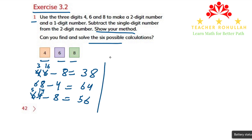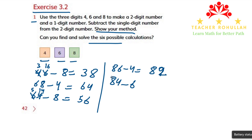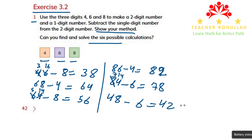These are three possible answers. Let's find the other three. We can make 86 minus 4, which equals 82. The fifth number we can make is 84 minus 6. 6 cannot be subtracted from 4, so we borrow from 8. It becomes 7, and the ones become 14. 14 minus 6 equals 8, and 7 minus nothing is 7, so the answer is 78. The last number is 48 minus 6, which equals 42, because 8 minus 6 is 2 and 4 minus nothing is 4.